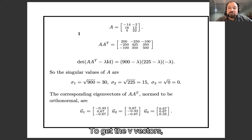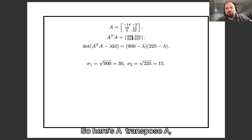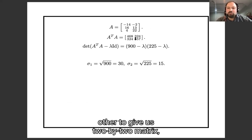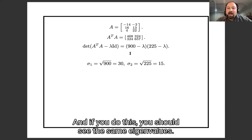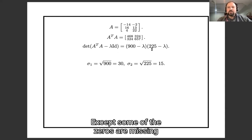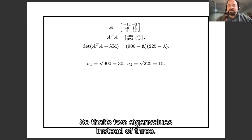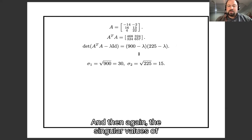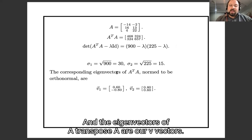To get the V vectors, we work with A transpose A instead. So here's A transpose A. These are the dot product of the columns of A with each other to give this 2x2 matrix. We compute the characteristic polynomial. And if you do this, you should see the same eigenvalues, 900, 225, and so forth, showing up. Except some of the zeros are missing because it's a 2x2 matrix, so it has two eigenvalues instead of 3. And then again, the singular values of our square roots, 30 and 15. And the eigenvectors of A transpose A are our V vectors.